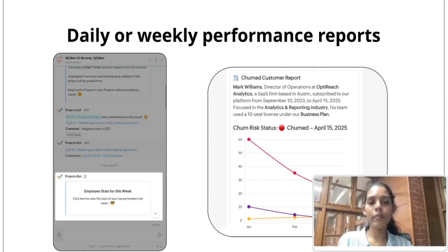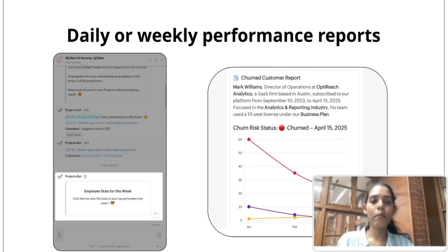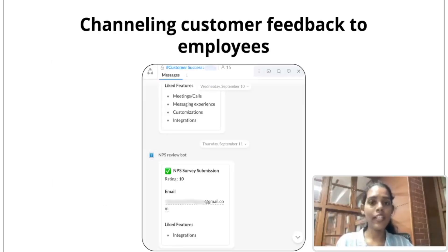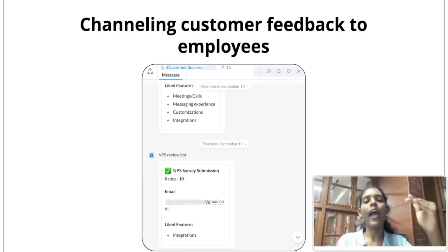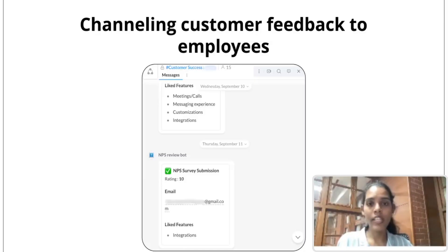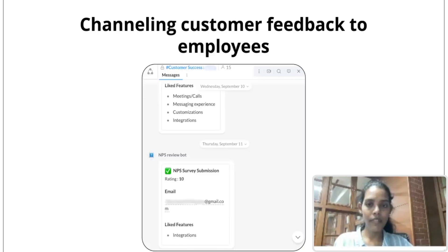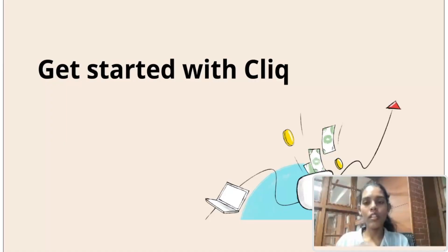For example, a churn customer report from Zoho Analytics is delivered into ZohoCliq as a notification, from where you can manage the entire customer journey using these reports. Not just the work you do, but also how customers feel about it — you can channel customer feedback to employees in your organization. You can set up an NPS survey form on your website, and every time the form is submitted, it is delivered as a notification inside a ZohoCliq channel.